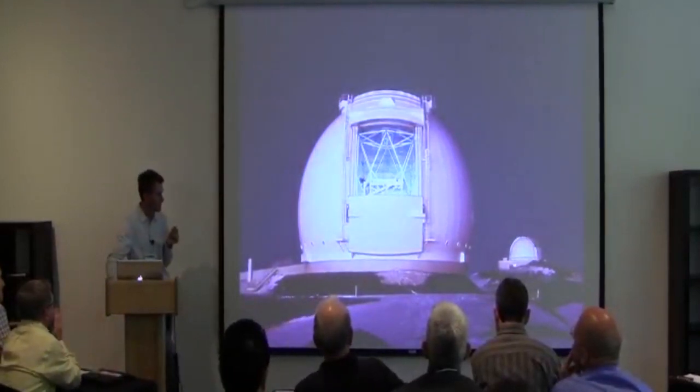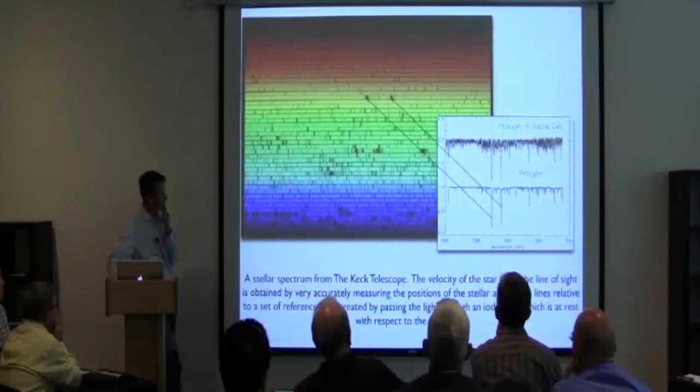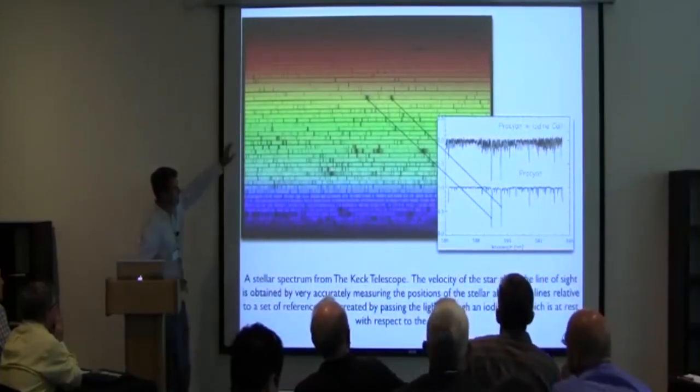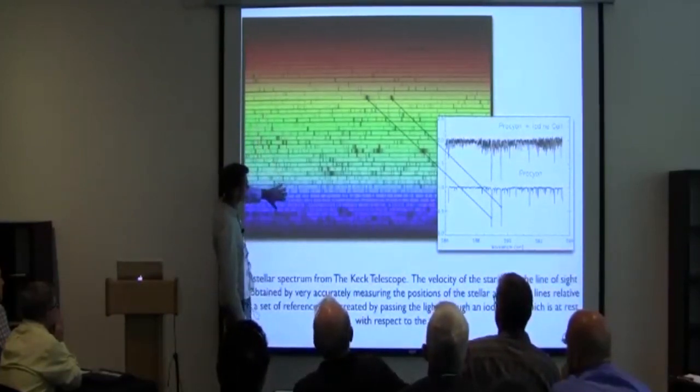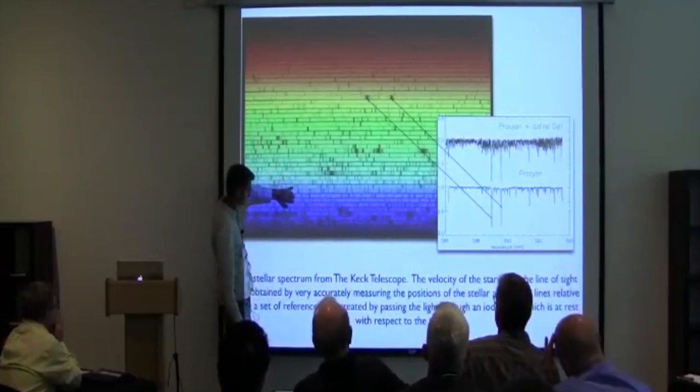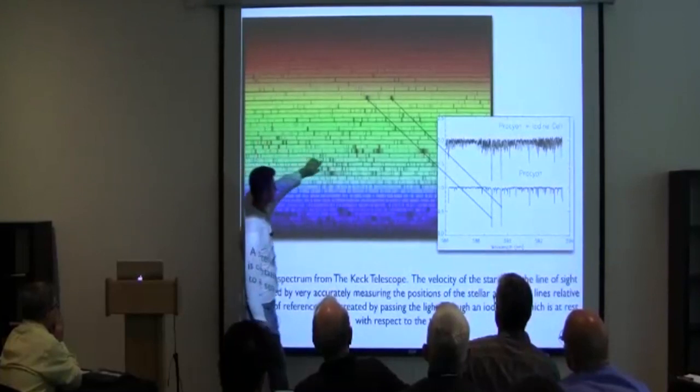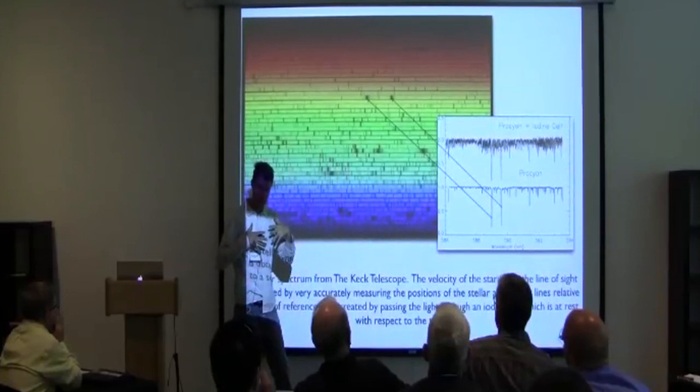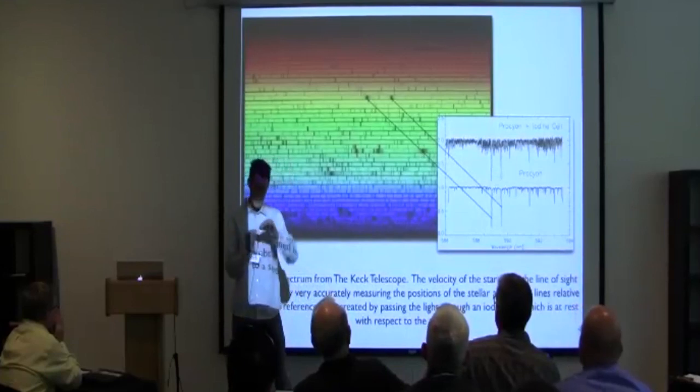So here's the Keck telescope. You probably saw that earlier this morning, Mauna Kea. And here's a spectrum of a star, nearby star Procyon, which was taken with the Keck telescope. You take the light from the star, you break it into a bunch of colored bins. This is the spectrum of the star, and you see all these dark lines. These are atomic absorption lines that are formed in the stellar atmosphere. The light from the hotter levels of the star goes through the cooler atmosphere and experiences absorption.